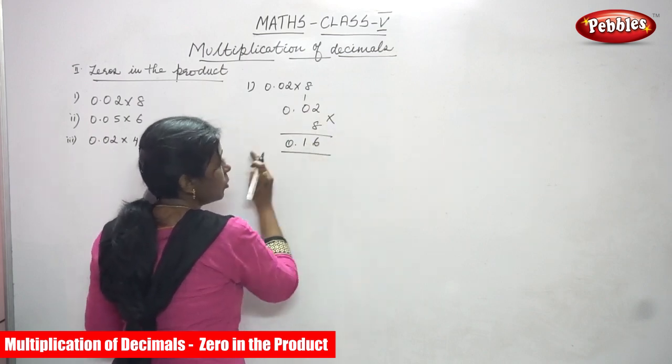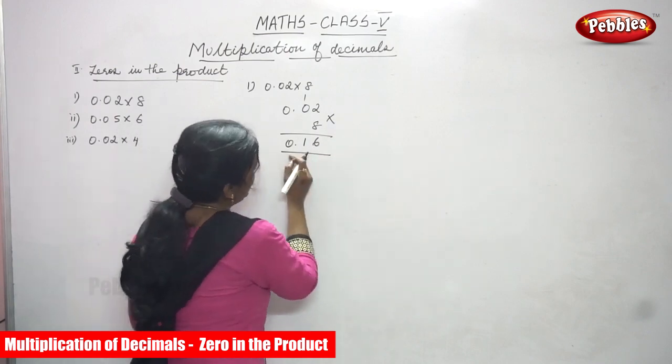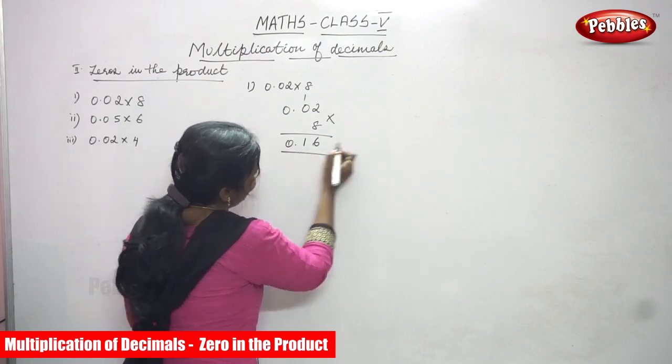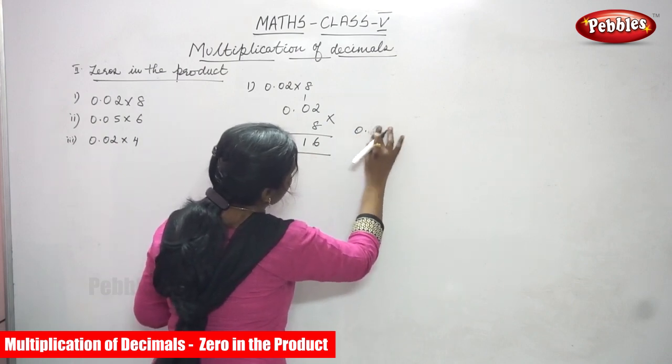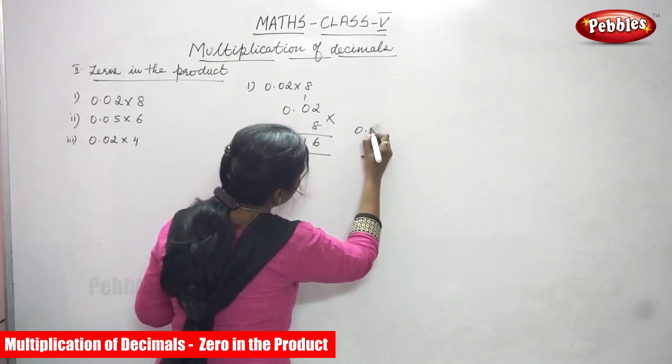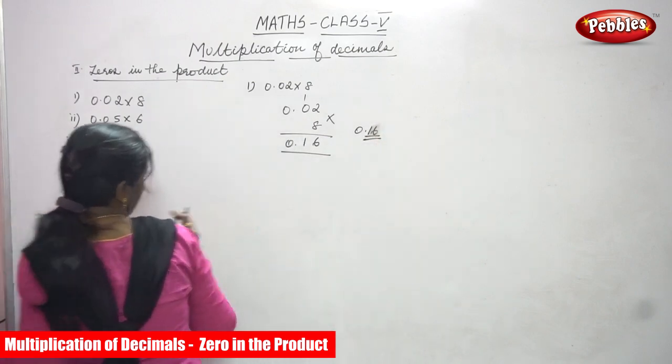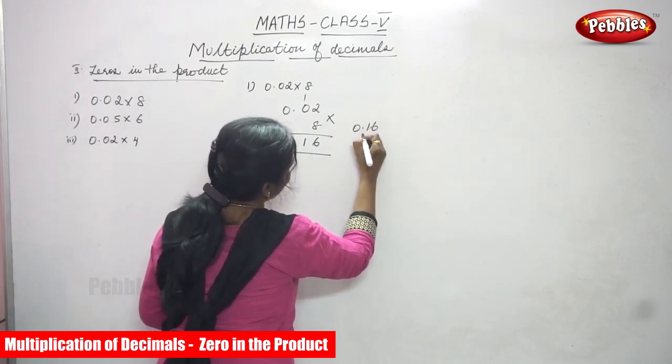Because we have to move the point from the right to left. From the right to left. So from the right to left, what is the answer? 0.16. The answer is 0.16. This is the answer.